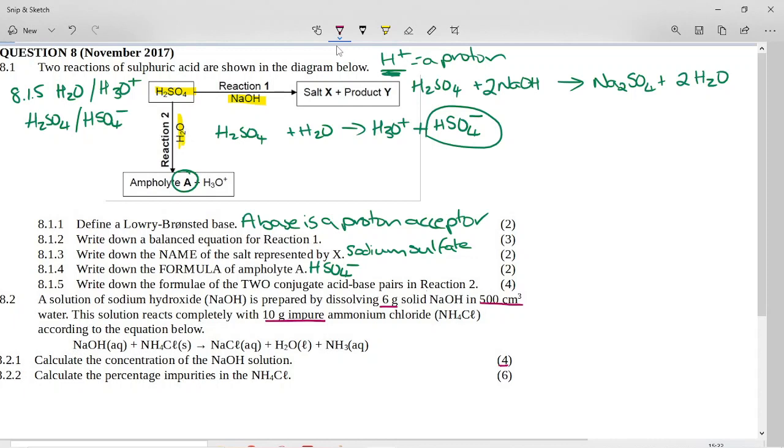It says calculate the concentration of the sodium hydroxide solution. So concentration, we can either use C equals N over V for a formula, or we can use C equals M over MV. So if we use C equals M over MV, that is mass over molar mass, we need to know what is the molar mass of sodium hydroxide.